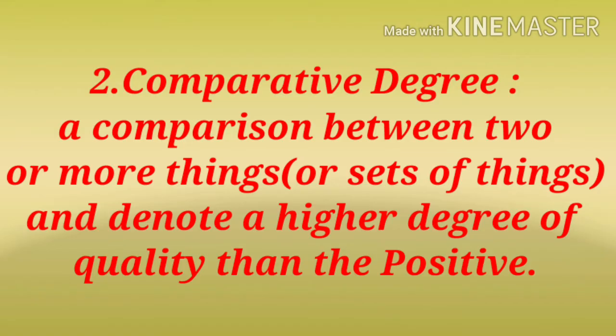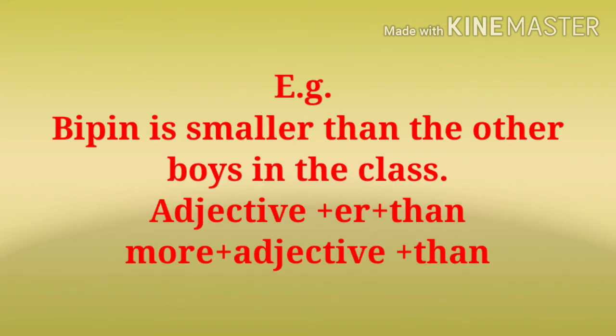Let's understand comparative degree in detail. Comparative degree expresses a comparison between two or more things or sets of things, and denotes a higher degree of quality than the positive. For example, 'Bpn is smaller than the other boys in the class.' The format of comparative degree is: adjective + er + than, or more + adjective + than.